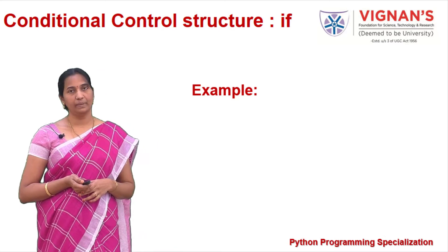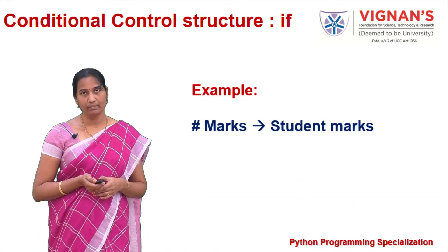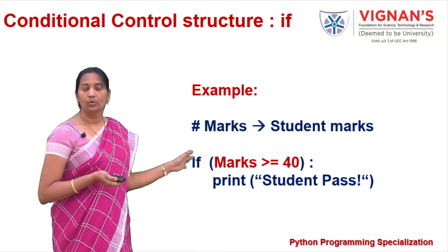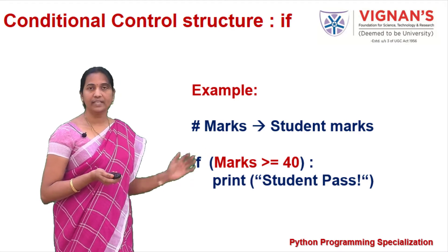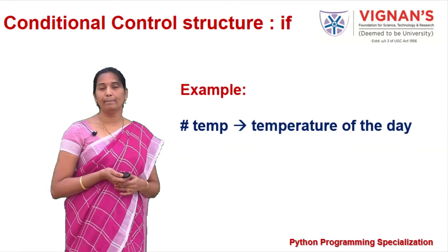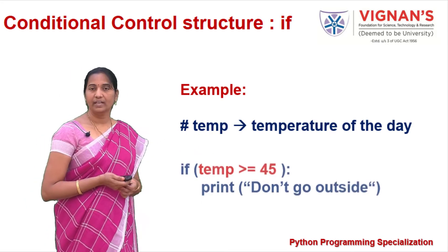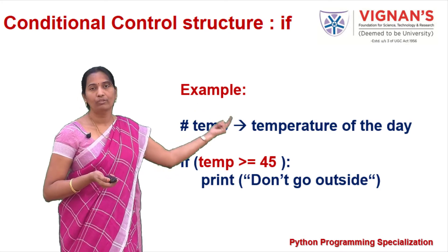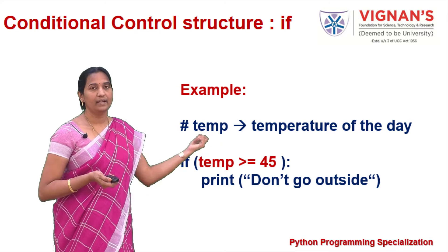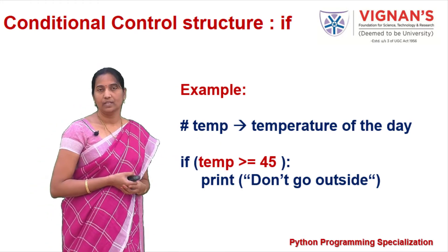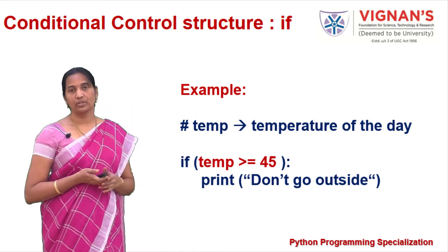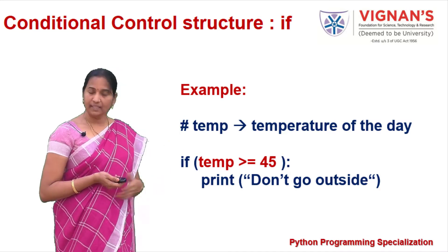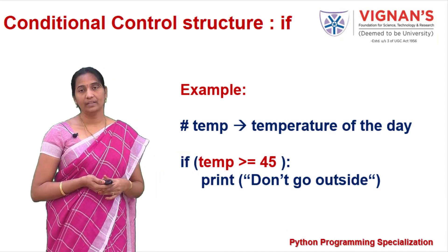Let's see examples of the simple if structure. If marks is greater than or equal to 40, then the student's grade is assigned as 'pass'. As another example, if temperature is greater than or equal to 45, then we warn people not to go outside. This is how we use the simple if structure — to execute statements when the condition is satisfied and skip them when it is false.